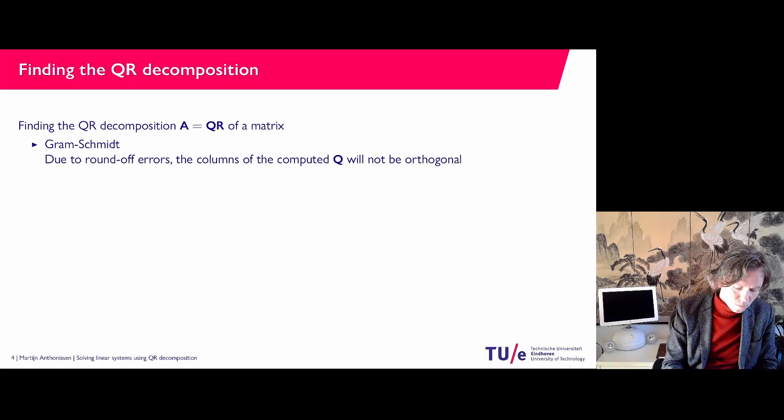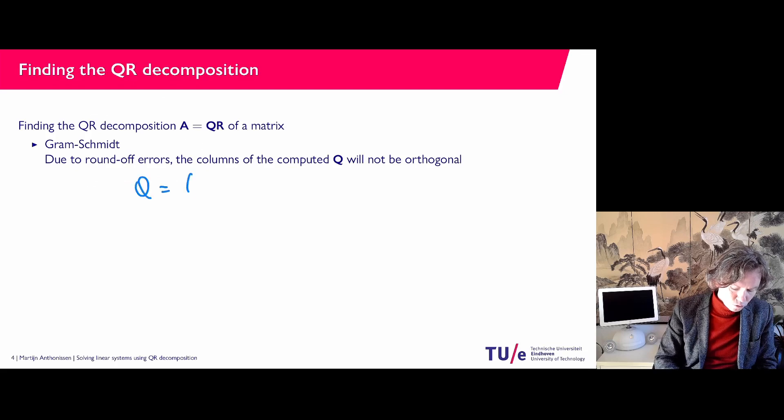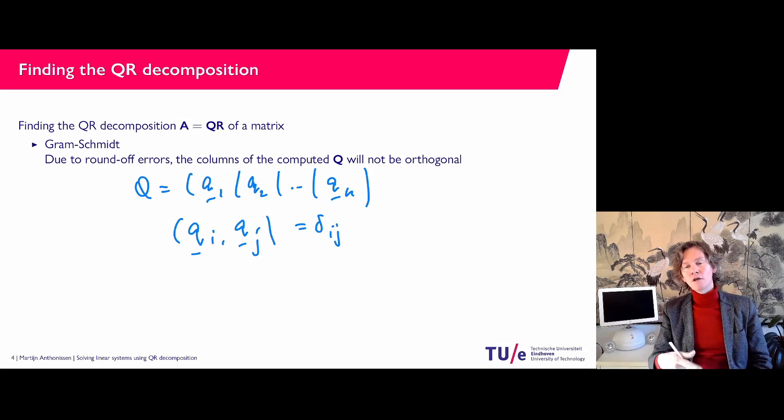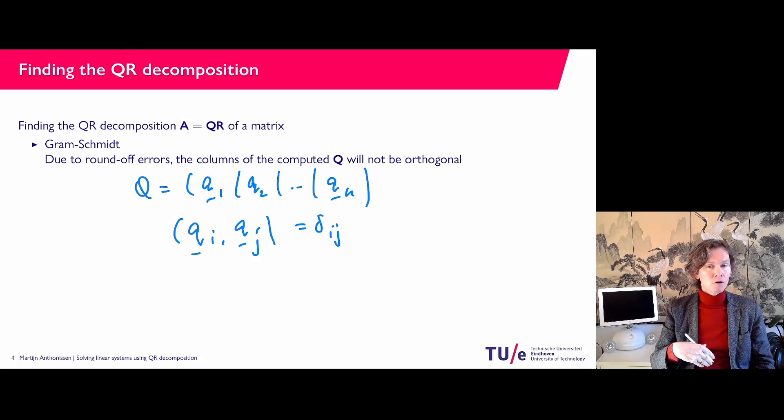If I write Q in terms of its columns Q1, Q2 up to Qn, then if you compute the dot product of Qi with Qj you find delta ij, the Kronecker delta. So if i equals j you find 1, which means all the columns have length 1. If they are different, i unequal j, you have 0 which means they are orthogonal, perpendicular. Now if you do it numerically using Gram-Schmidt they probably won't be.